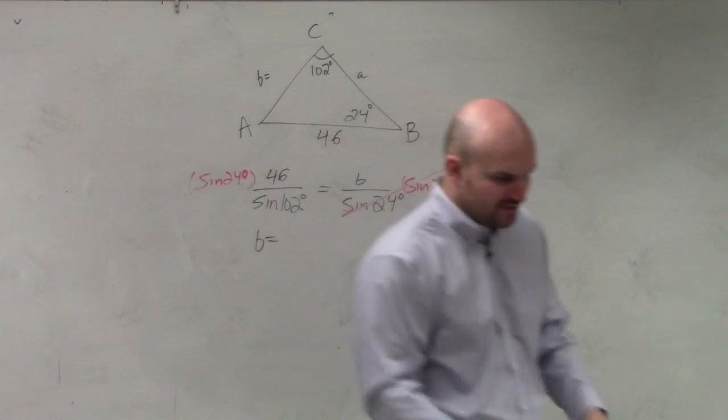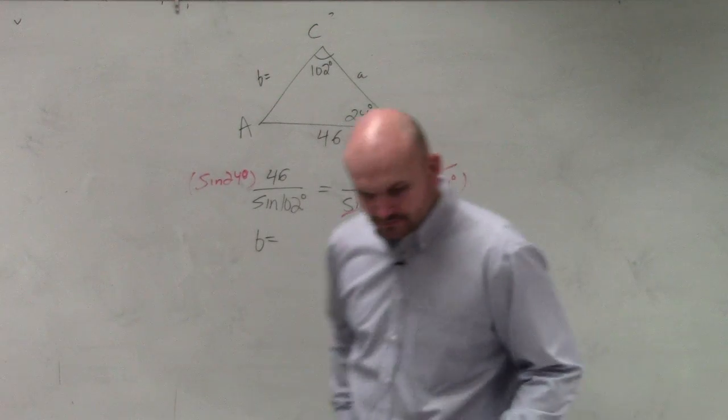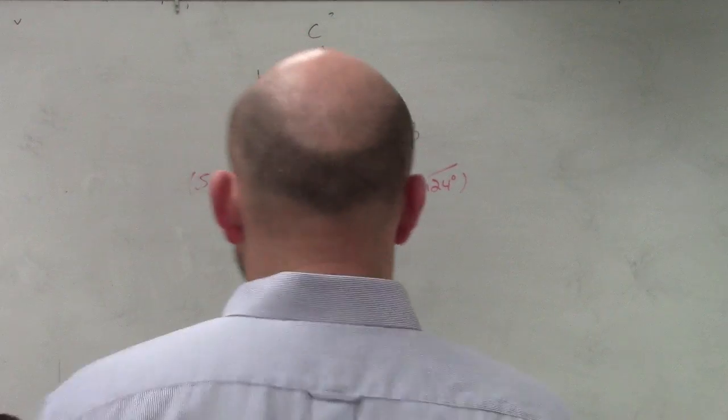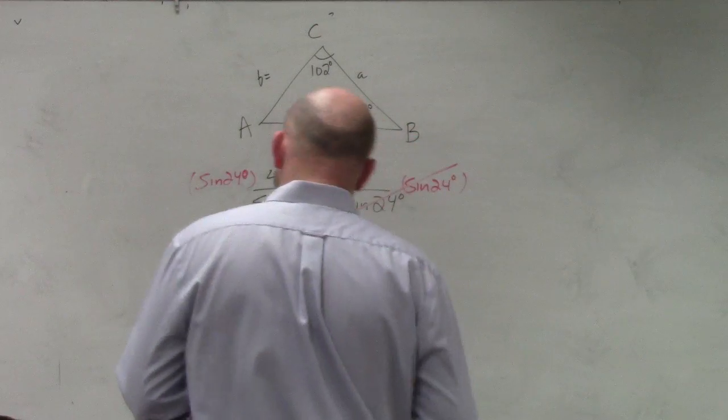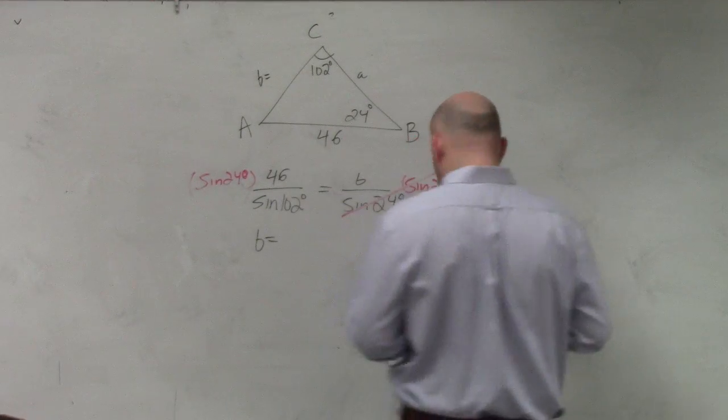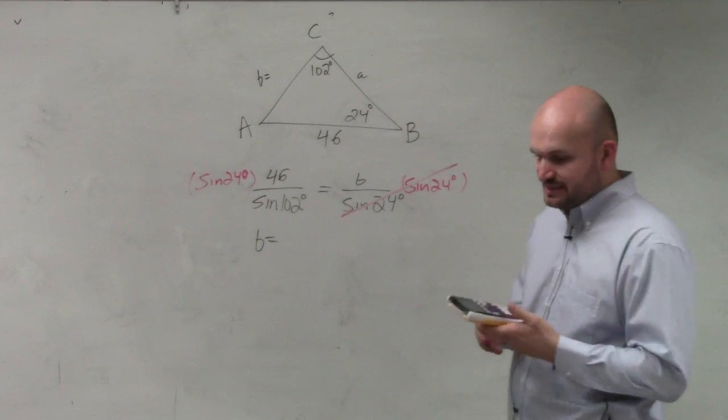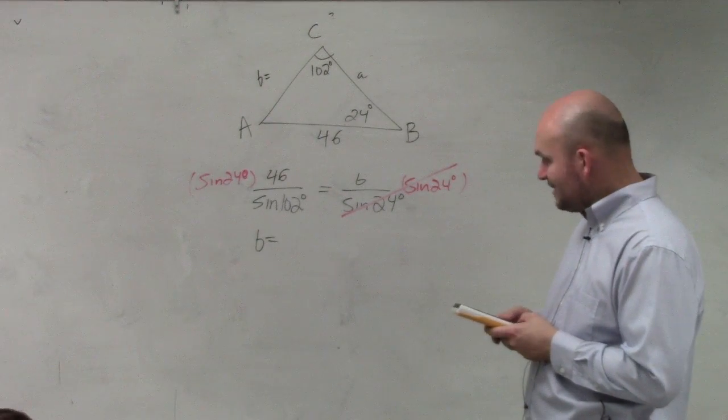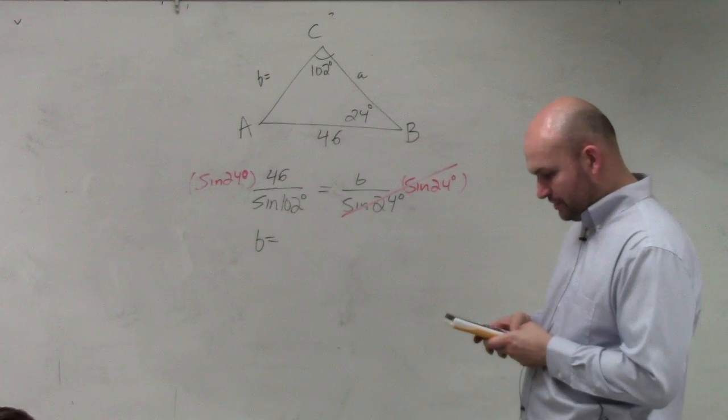So, B equals—now we just type that into our calculator. Where'd my calculator go? So, into your calculator, you're just going to type in the sine of 24, end the parentheses, times 46, and then divide that by sine of 102.